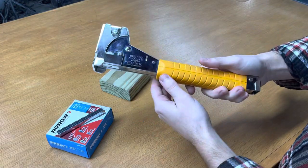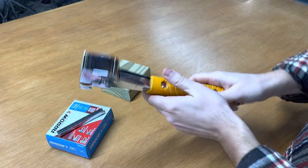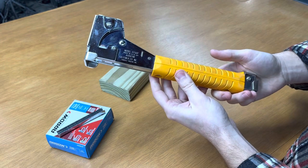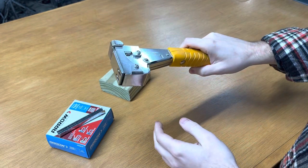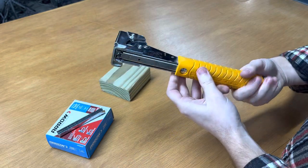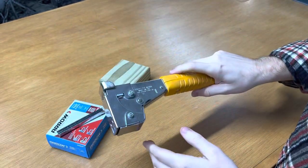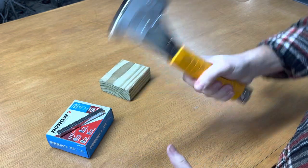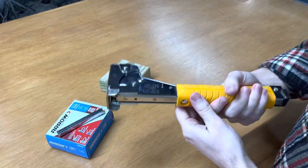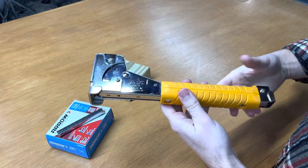In this video I want to quickly show you this Arrow hammer stapler. This is something that I bought when I redid the siding on my house myself. When I was doing the house wrap, this was the tool for the job to quickly staple it up.